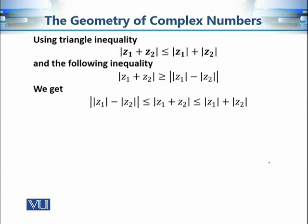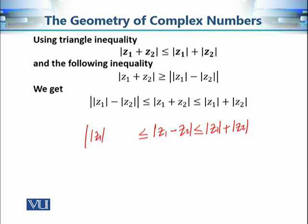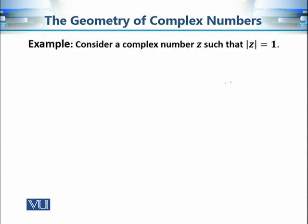On the same lines, we can prove the following inequality: for z1 − z2, the subtraction of these two complex numbers also has the same upper bound, i.e., |z1| + |z2| ≥ |z1 − z2| ≥ ||z1| − |z2||.